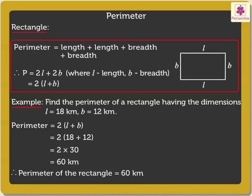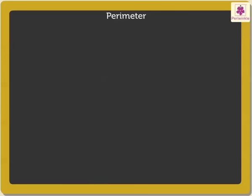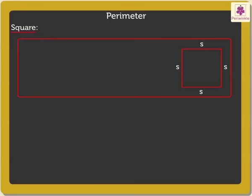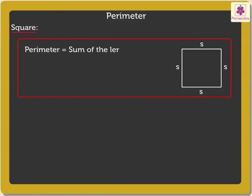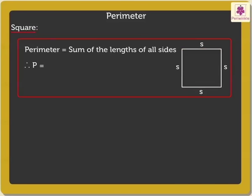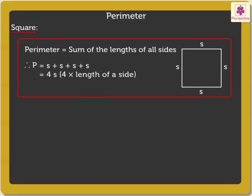Finally, let's look at the perimeter of a square. We know that the lengths of the four sides of a square are the same. Thus, the perimeter of a square can be calculated by adding all four sides. Perimeter of a square is equal to S plus S plus S plus S, which is equal to 4 times the length of a side.